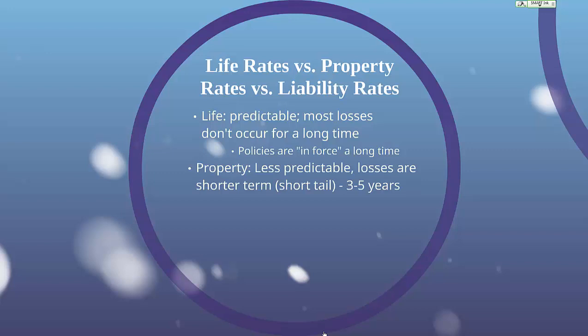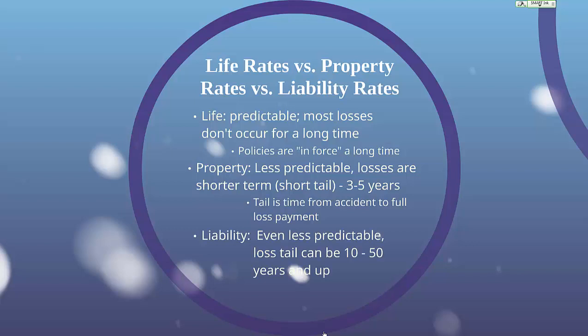Property is much less predictable, and losses are shorter term — also known as short tail, which is three to five years. The tail in insurance is the time from the accident to full loss payment. Personal property is even shorter, being one to three years — for example, if a person has roof damage, it might take one year for the full payment to be paid out. In terms of liability, this is even less predictable — of the three, it's the least predictable, and the loss tail can be 10 to 15 years and even higher. This means it might take a very long time for the actuary to know whether their loss predictions were correct.